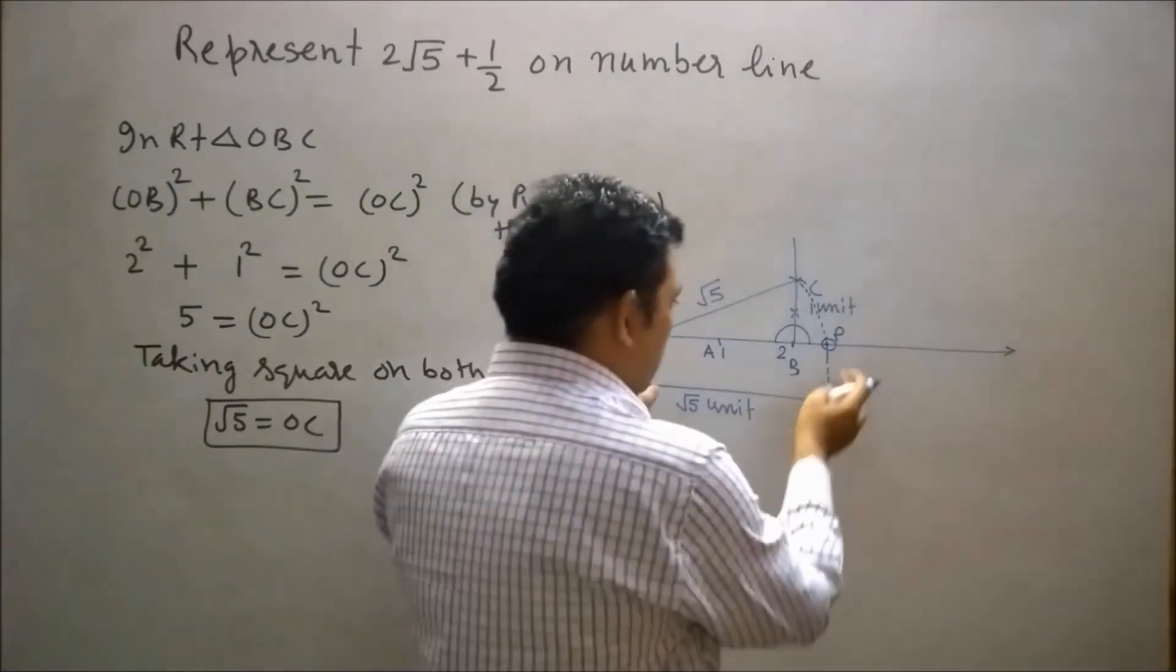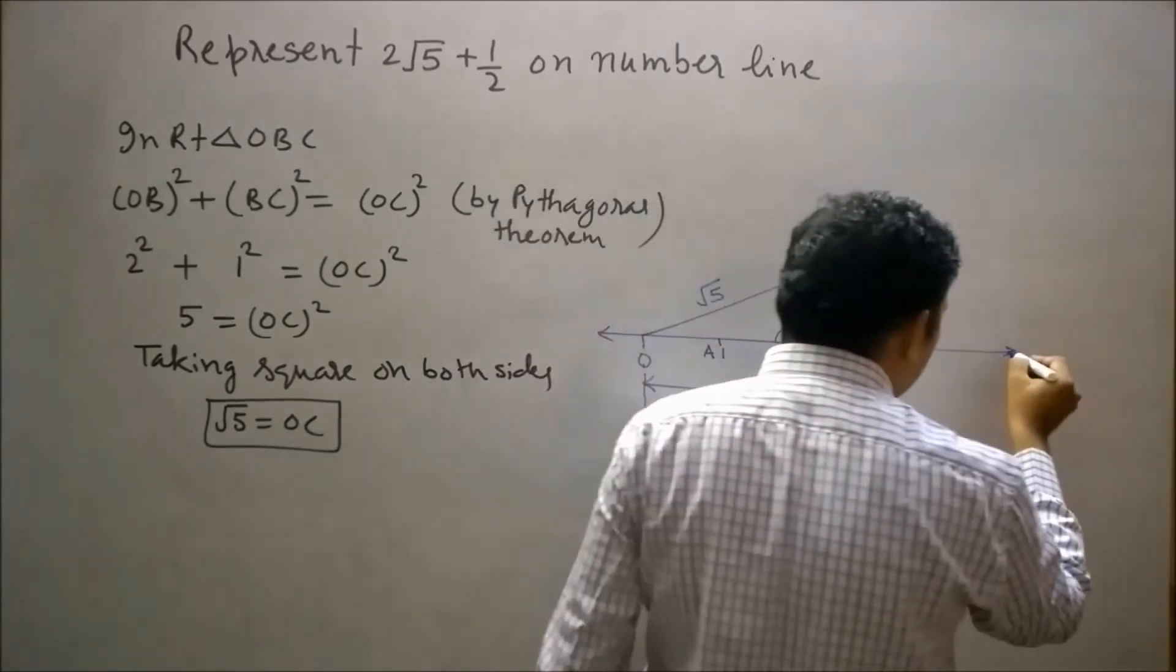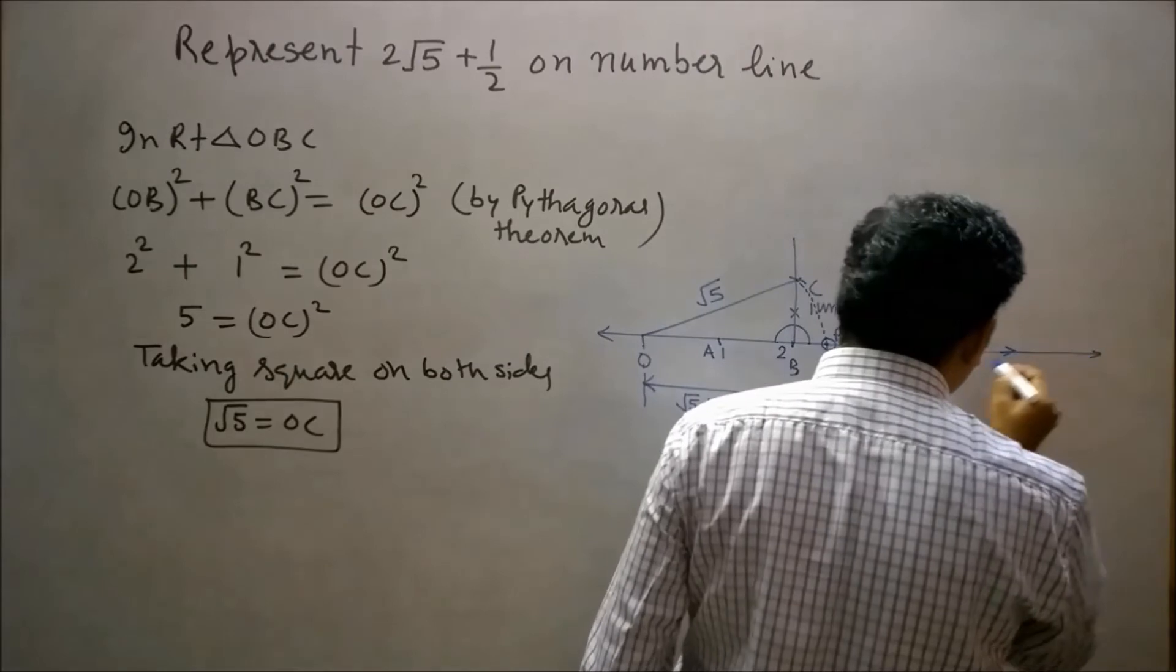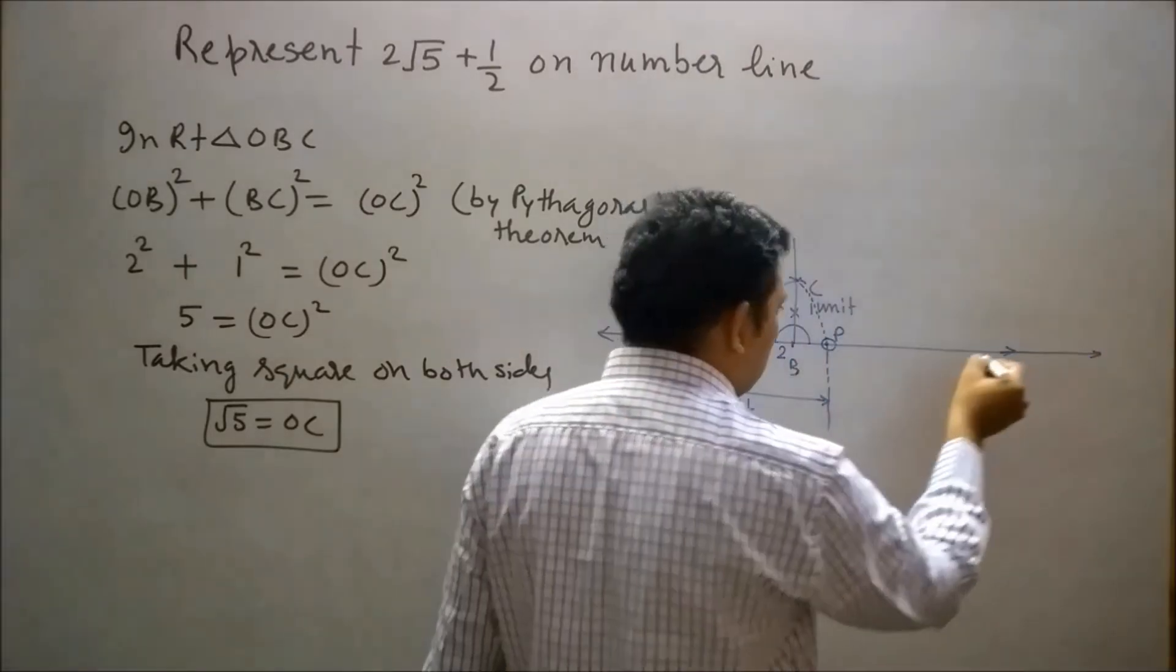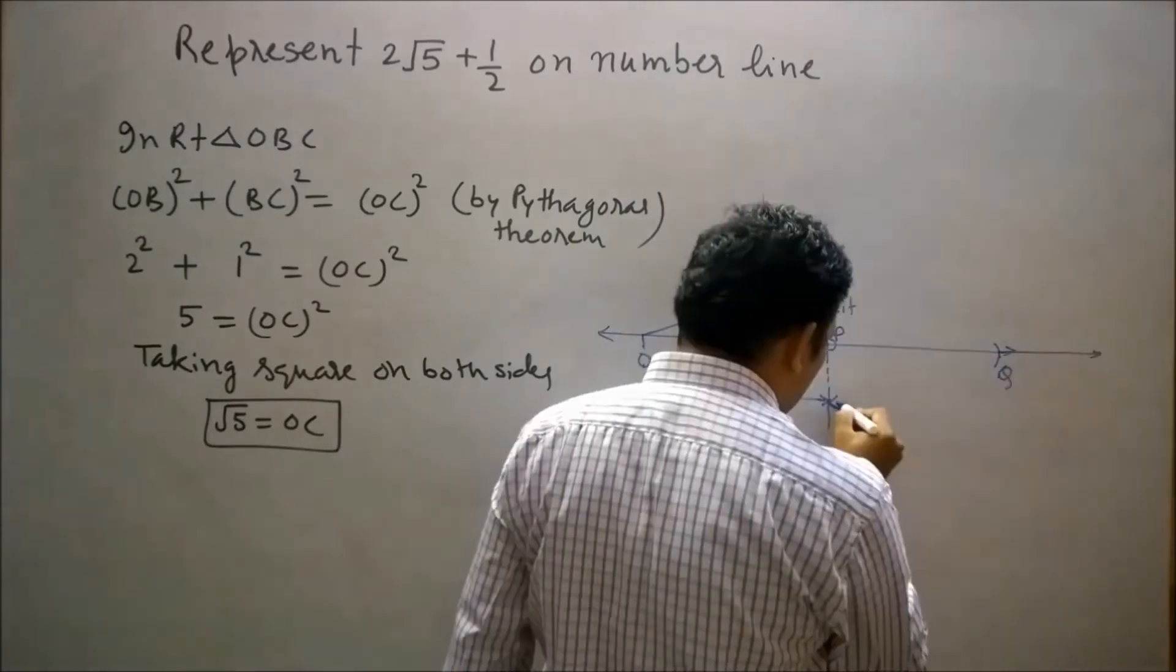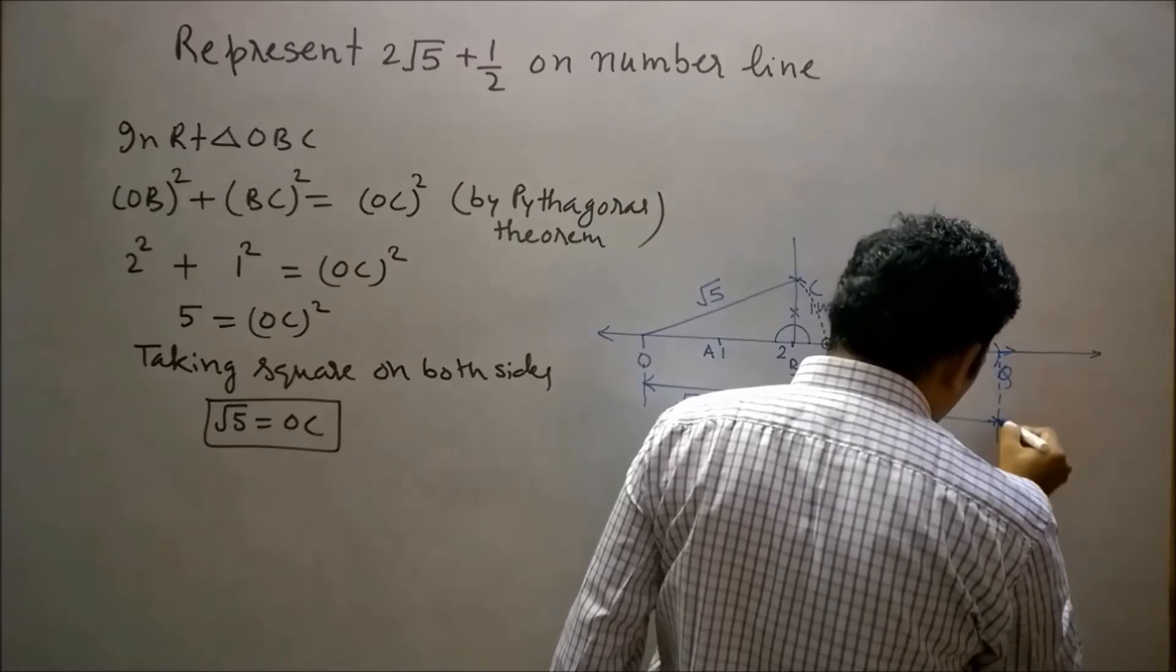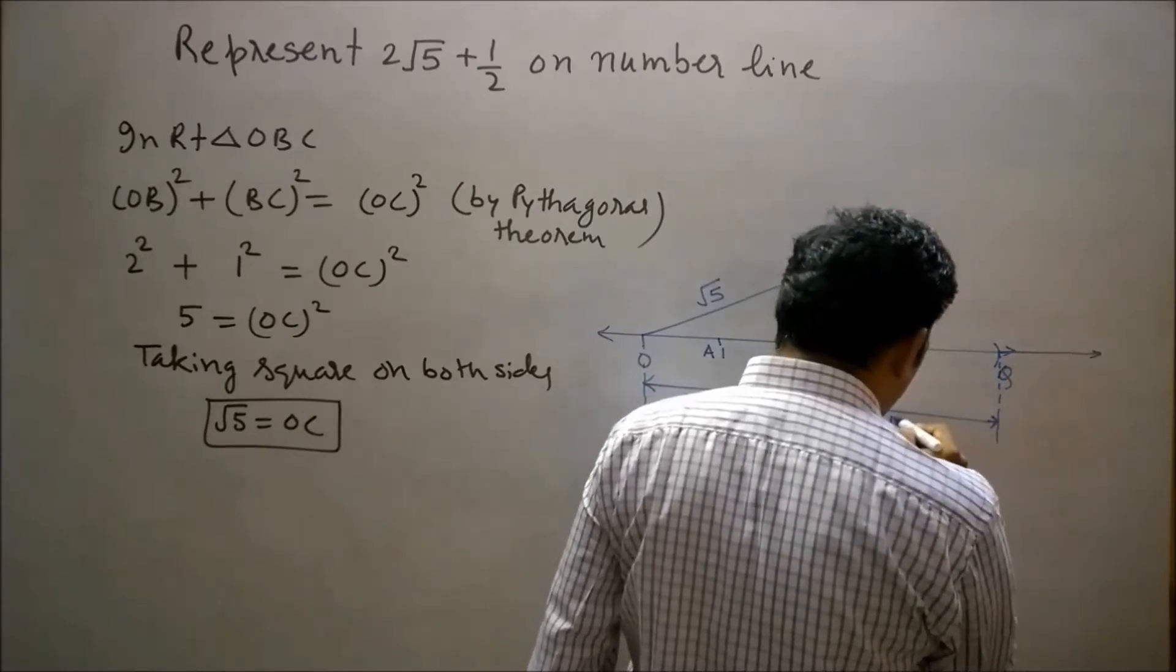Now draw equal arc of OP to the right side of P. Let's say this is my Q. So PQ is also √5.